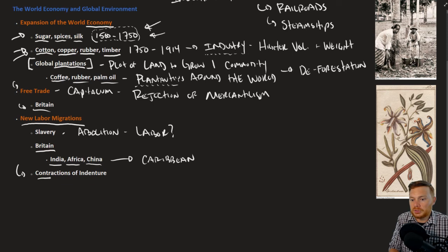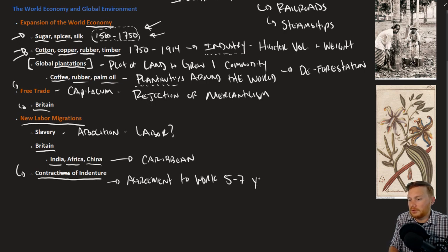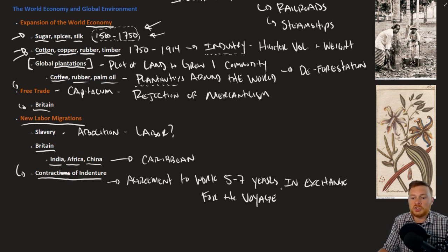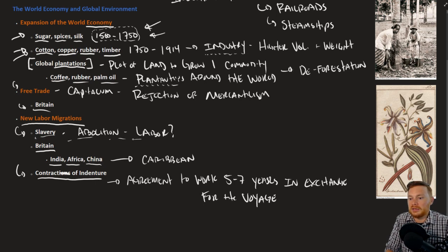Most of these individuals signed contracts of indenture — an agreement to work, typically five to seven years, in exchange for the voyage. For example, many laborers from India went to British colonies in the Caribbean. Whoever was in charge of the economic venture would provide the laborers with a contract; they would agree to work five to seven years, and in exchange they would receive passage to the Caribbean. This represents new labor migrations replacing slavery, with people from within empires traveling and settling in other areas.